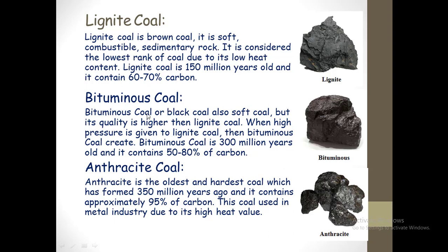Bituminous coal, or black coal, is also a soft coal but its quality is higher than lignite coal. When high pressure is applied to lignite coal, bituminous coal is created. Bituminous coal is 300 million years old and it contains 50-80% carbon. Anthracite coal is the oldest and hardest coal, from 350 million years ago, and it contains approximately 95% carbon. This coal is also used in the metal industry due to its high heat value.